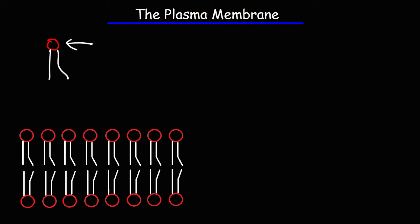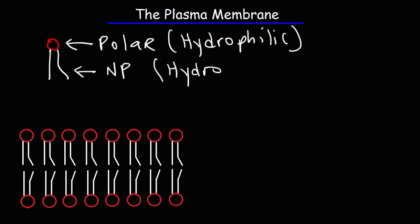The head of the phospholipid is the phosphate group and it's polar which means that it's hydrophilic. Hydro means water, phil means love, so it loves water. The tails are nonpolar and so they are hydrophobic. They don't like water. They tend to stay away from water.